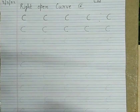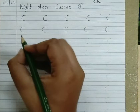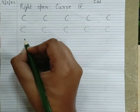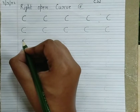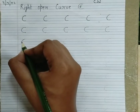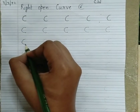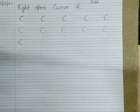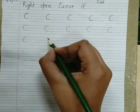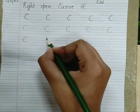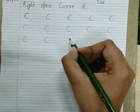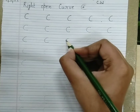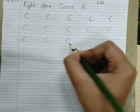Now we will do tracing. You only have to trace these right open curves. Can you all see the dotted lines here? We are going to join these dots — you only have to join these dots, like this.